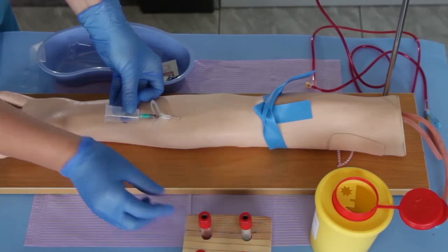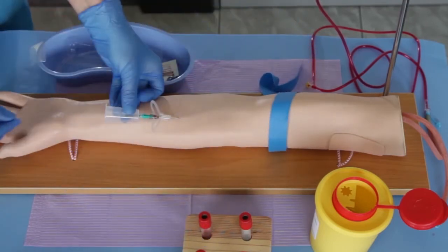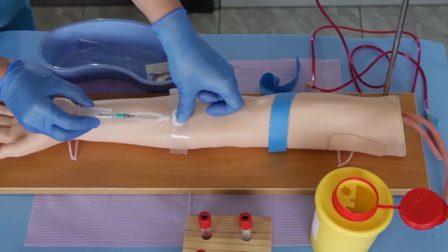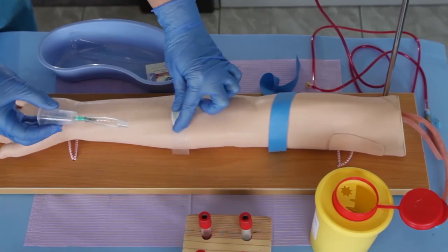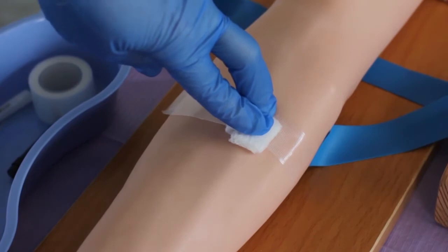Once sufficient blood has been collected, release the tourniquet before withdrawing the needle. Gently withdraw the needle and place a clean gauze pad or dry cotton wool ball with strapping on the site. Apply firm pressure to achieve hemostasis and avoid a hematoma.